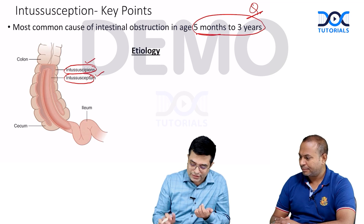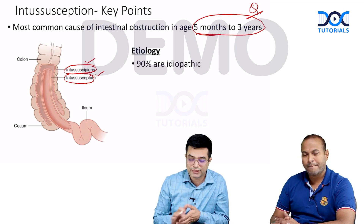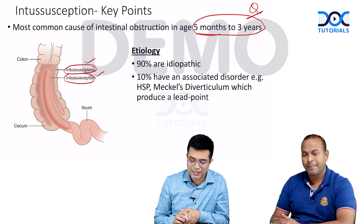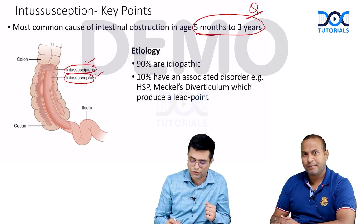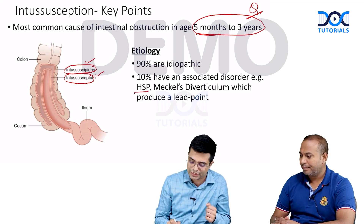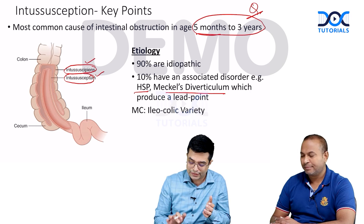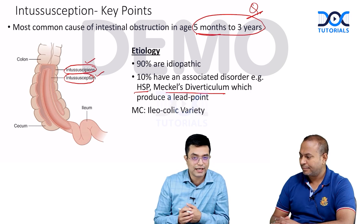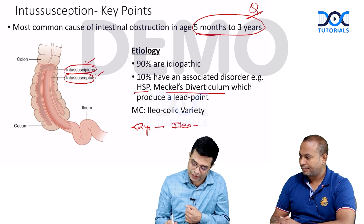Etiology-wise, 90% of patients are found to be idiopathic, whereas 10% have an associated identifiable disorder such as HSP or Meckel's diverticulum, which tends to produce a lead point. The most common variety is ileocolic; however, children less than two years of age can also have ileo-ileal variety.